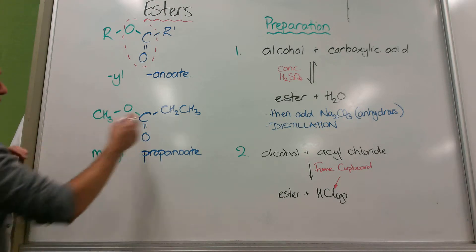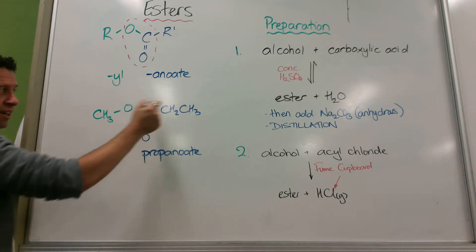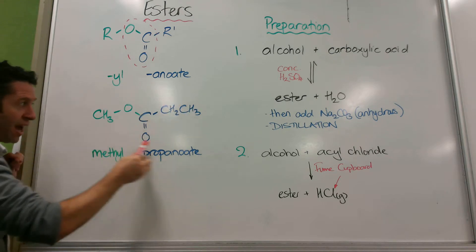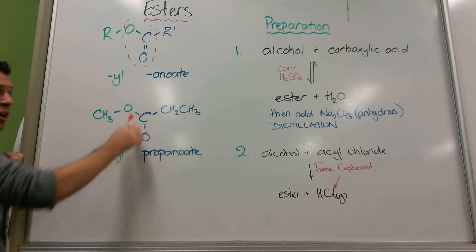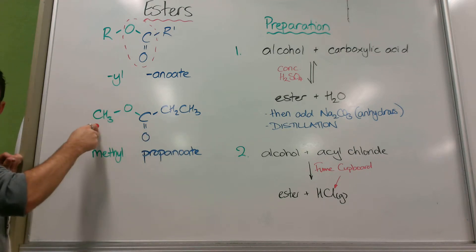Here you can see there are one, two, three, don't forget this carbon, three carbons that have come from a carboxylic acid. So this is the propanoate ion with a side chain basically. So that's what's called methyl propanoate.